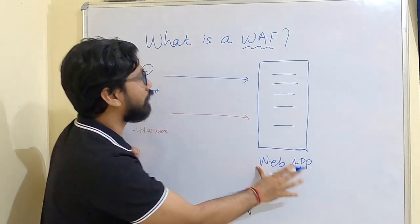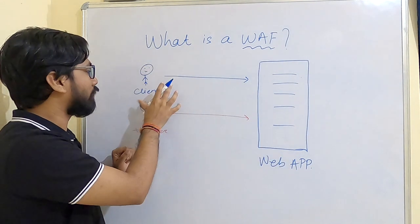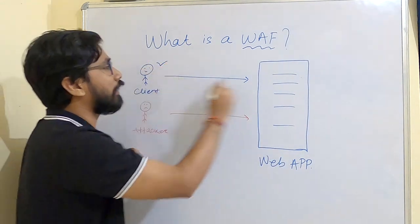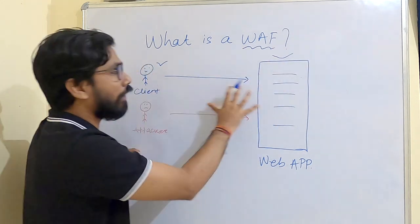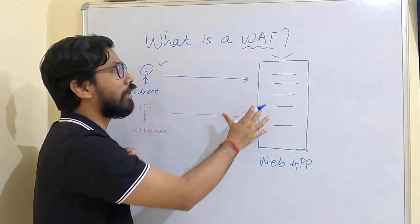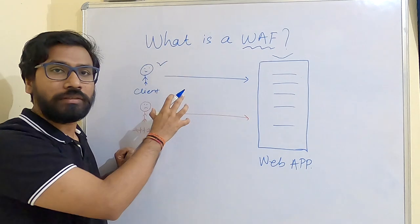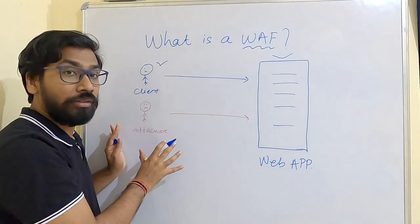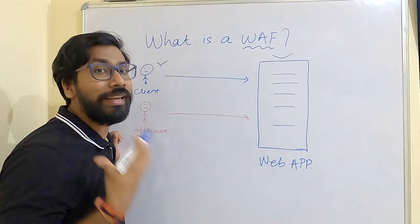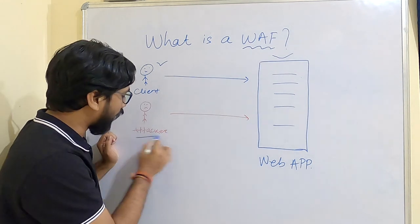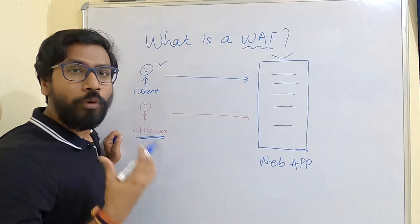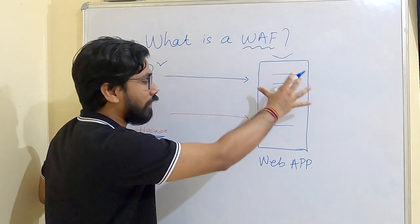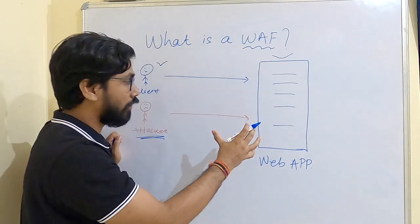This is your web application and you have some clients accessing your web applications and enjoying your services. Some clients have bad intentions and those are called attackers. Now the question is, how do you protect your web applications from these attackers?